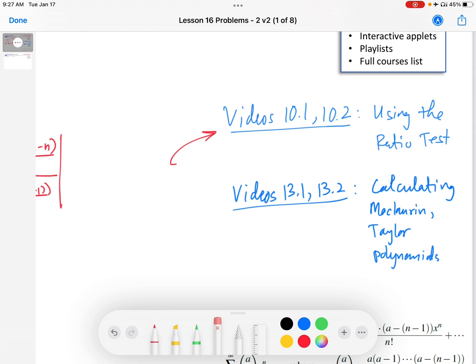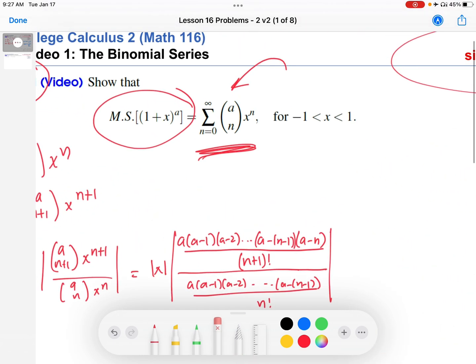So let's go back here and show that this McLaurin series for the function 1 plus x to the a, which we're going to take as given, again calculations are in the lesson notes, is equal to this binomial series and actually converges on this interval.